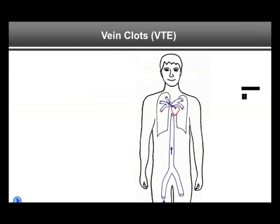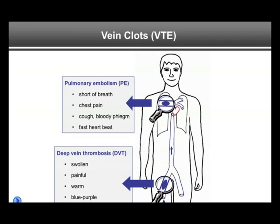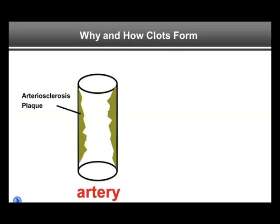Vein clots — the main topic of our discussion today — are clots in the veins, typically in the pelvis or the leg, which impair the outflow of blood out of the extremity. We still pump blood in, but it does not flow back, so the extremity swells up, becomes painful, and since blood is bluish-reddish, the discoloration is bluish-purple, and the extremity feels warm. If a clot occurs in the lung, this is called a PE, and the patient may experience shortness of breath, chest pain particularly when taking a deep breath, cough, bloody phlegm, and an unexplained fast heartbeat above 100 per minute.